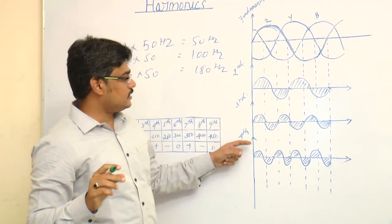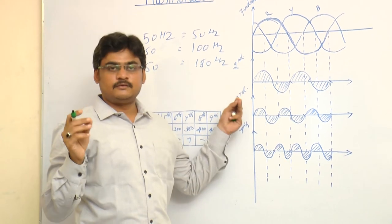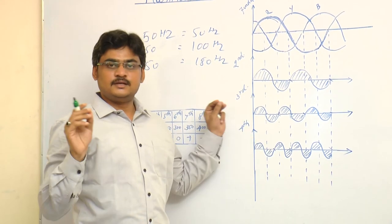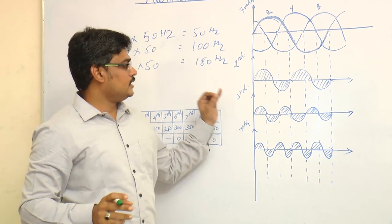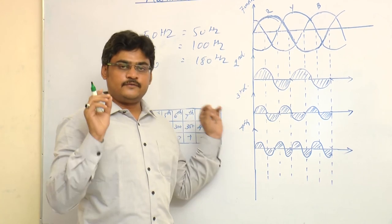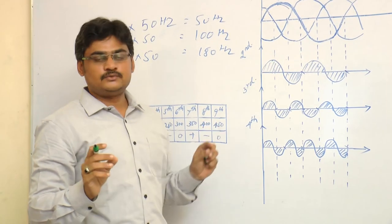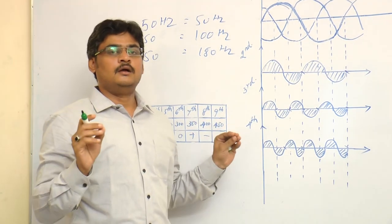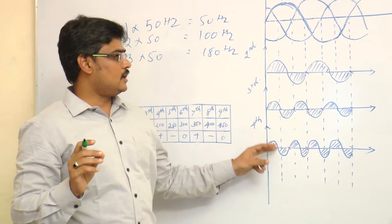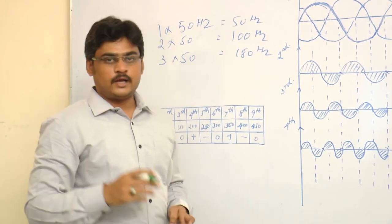So every instant it pollutes your fundamental waveform. But other order harmonics either pollute your fundamental waveform in R phase or Y phase. But third order harmonics pollute your waveform every instant, every 60 degrees. That is why third order harmonics are more severe than other order harmonics.